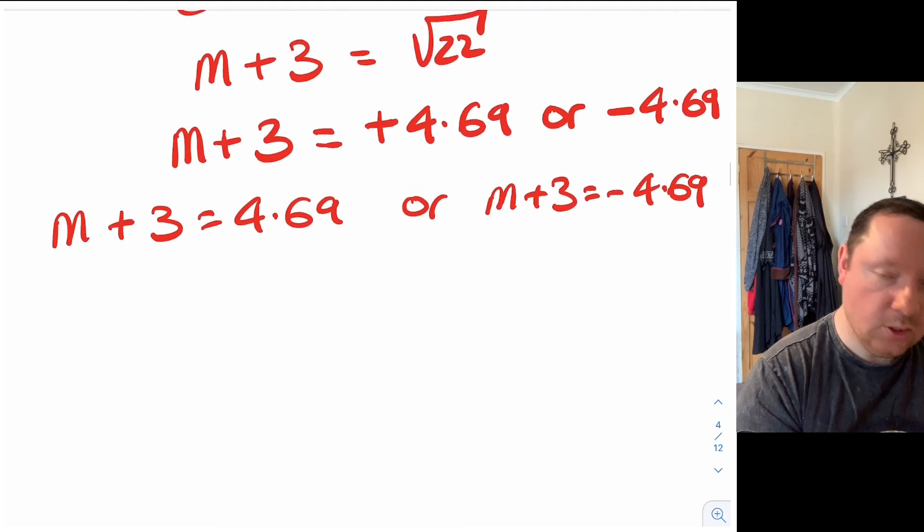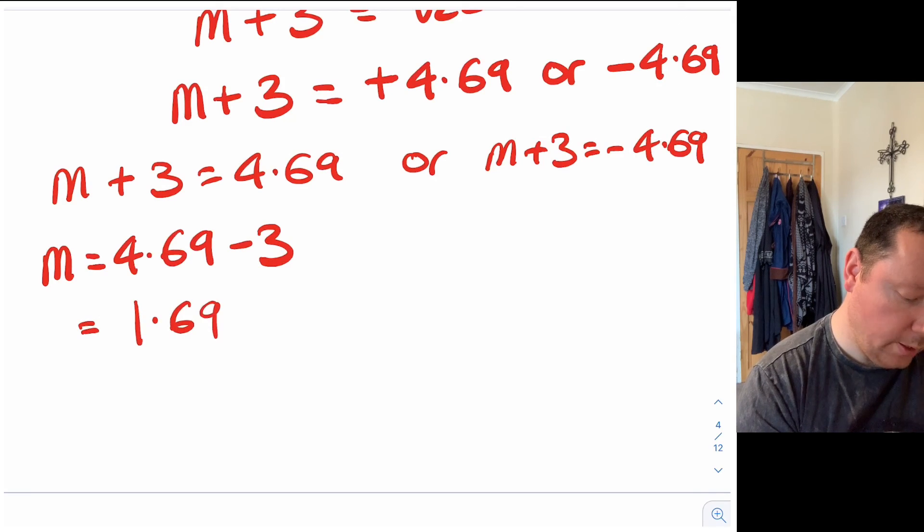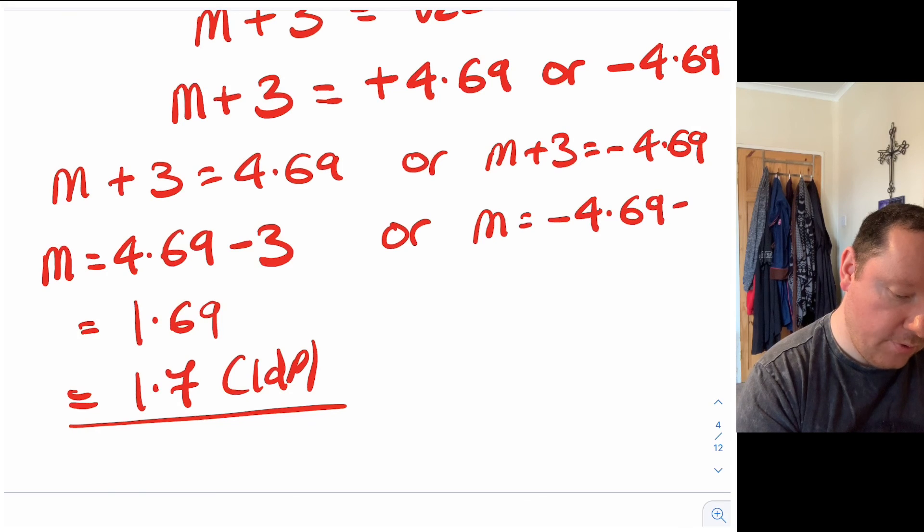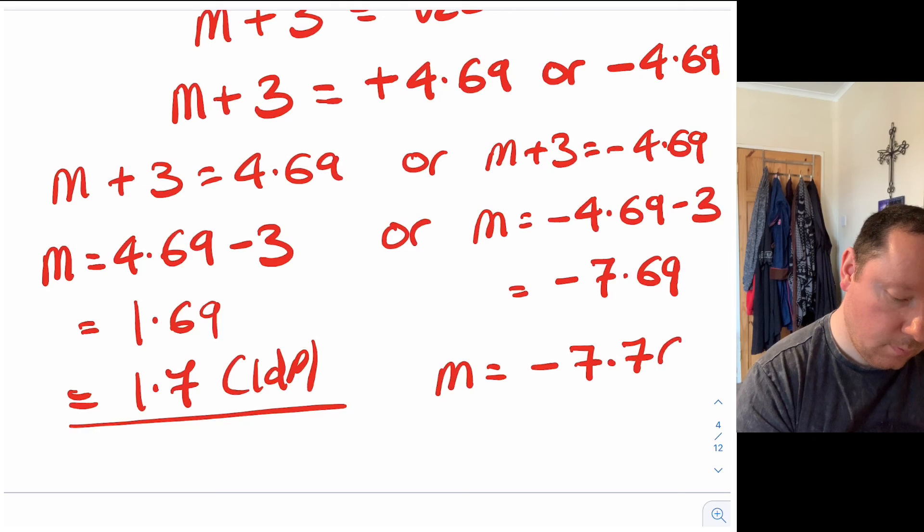Final step: simple equation to solve. Just move the 3 across for both equations. So m equals 4.69 take away 3 which is 1.69 which to one decimal place is 1.7. And for the other one m equals minus 4.69 take away 3 because it plus 3 becomes a minus. So that equals minus 7.69 which to one decimal place is minus 7.7. So we end up with two solutions.